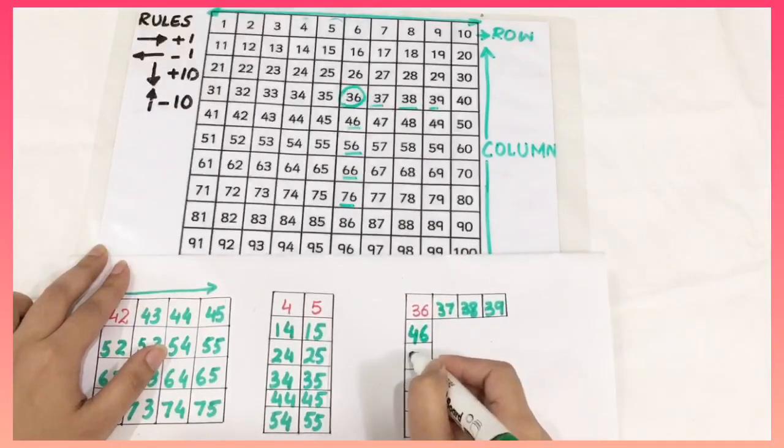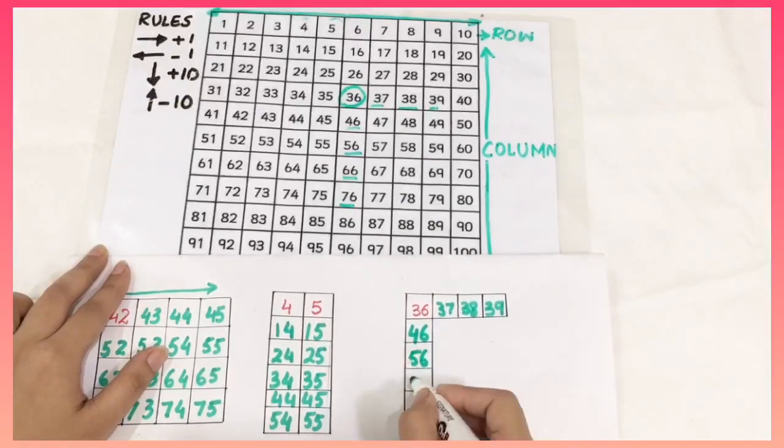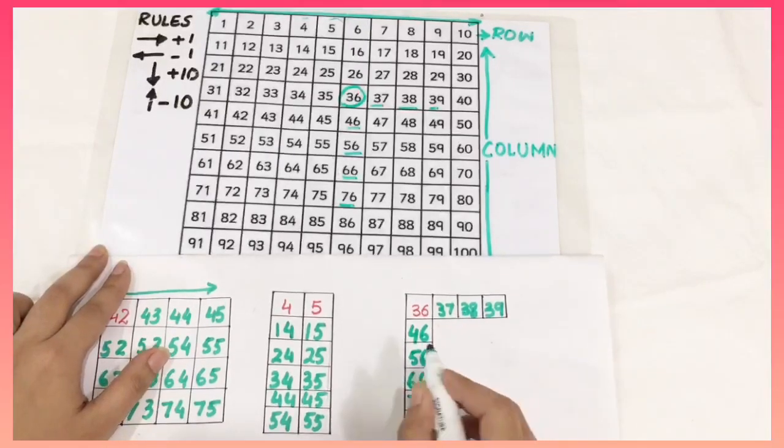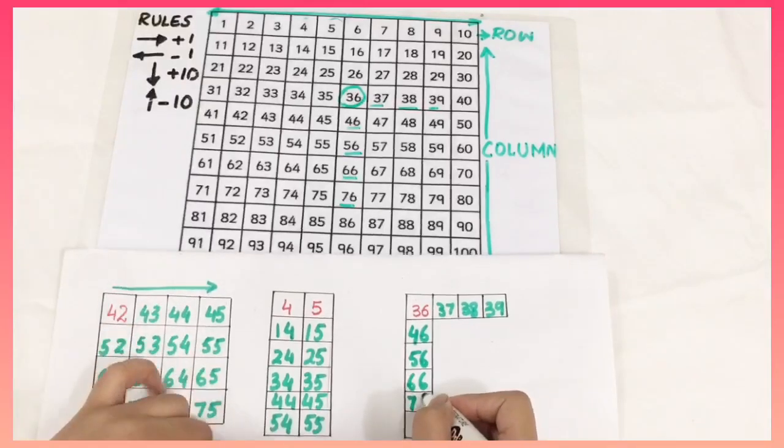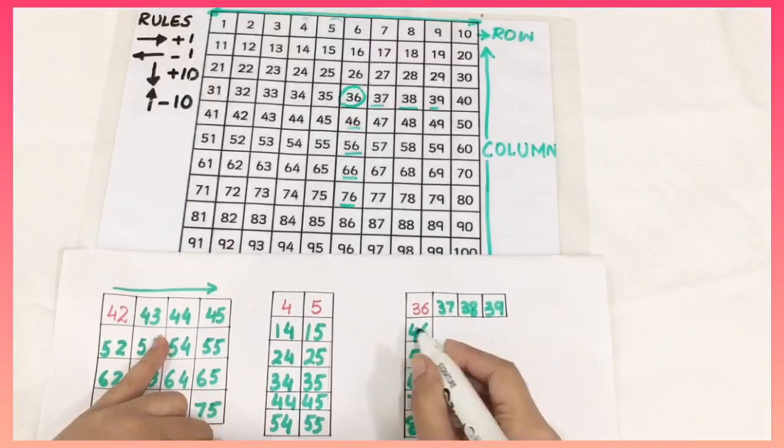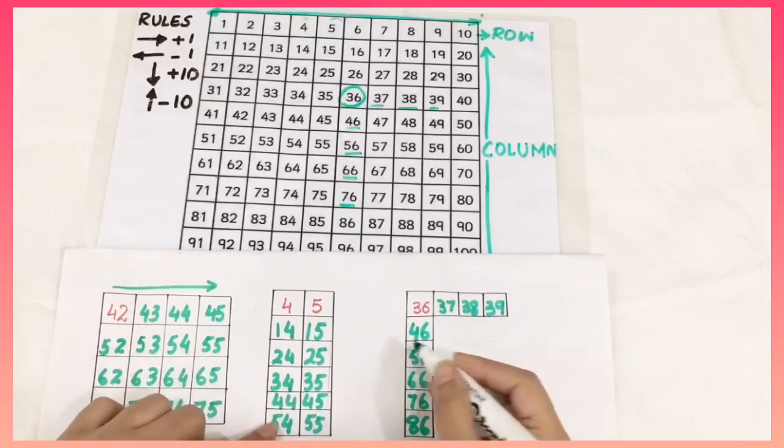Now this is I am going to write here. Here you have to keep in mind that the unit numbers or unit digits in these numbers are the same whereas the tenth numbers are increasing.